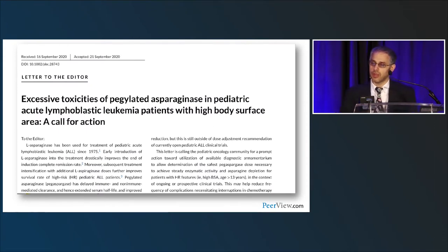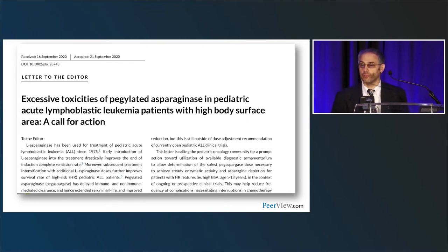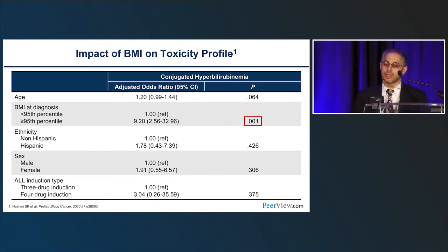As Stuart pointed out, more asparaginase is better for outcomes, but too much can cause problems. The adult oncology community has been very focused on dose capping asparaginase, often capping at one vial size of 3,750 international units. In the pediatric community, as we have more patients with high body surface area and obesity, we should think about whether some of these patients would benefit from dose capping without affecting efficacy. A study showed BMI greater than the 95th percentile was the only significant finding for increased toxicity — specifically conjugated hyperbilirubinemia.